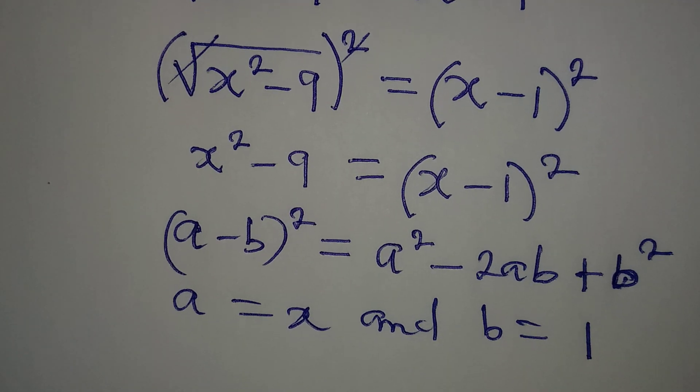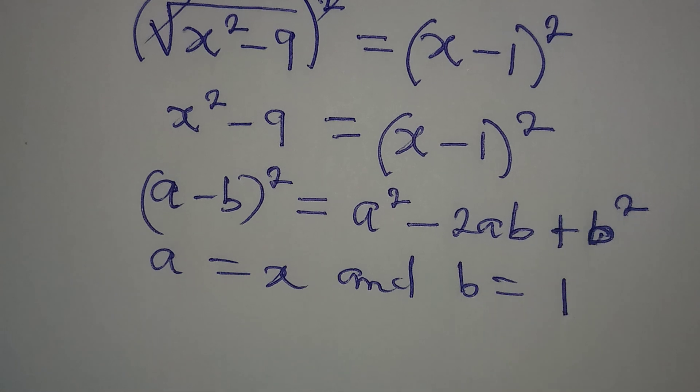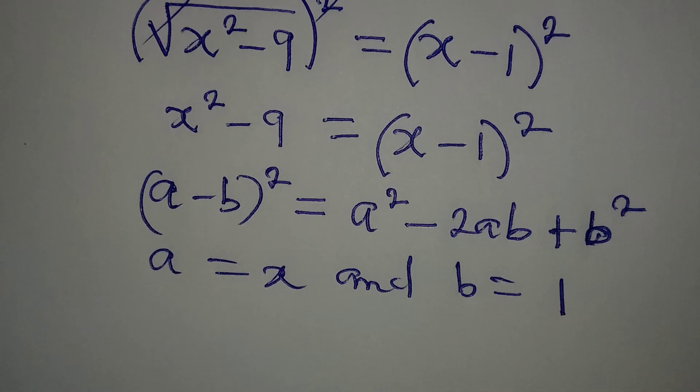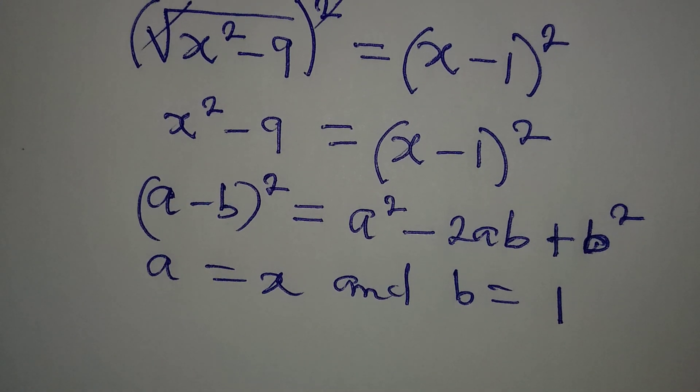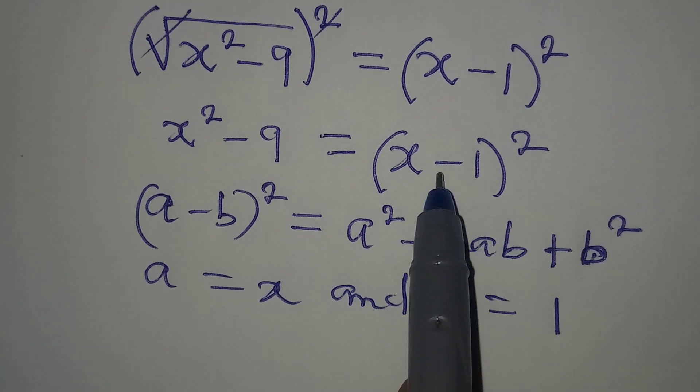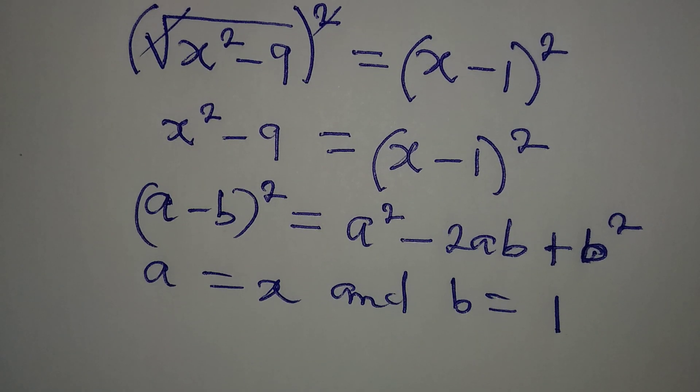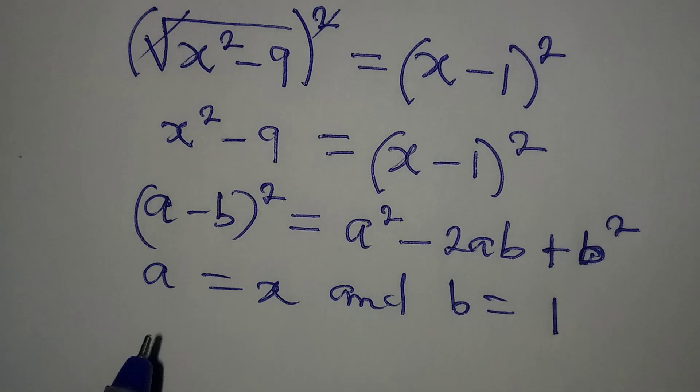Now somebody will be mistaken, you know, they will take minus 1 to be b. But that is not correct. Because what we have to pick is just the a, b, not the sign anymore. Now let's continue from here.